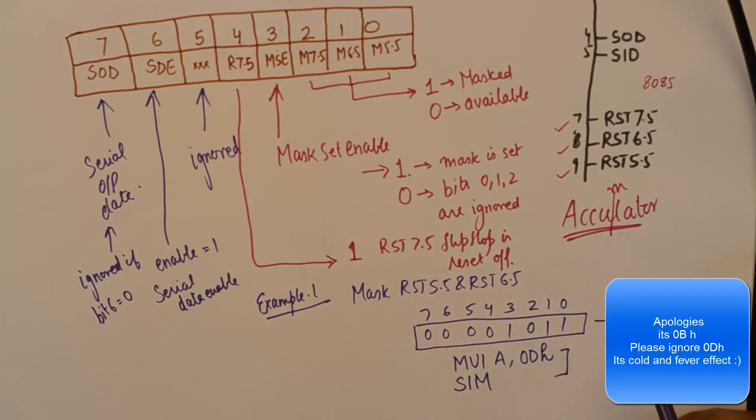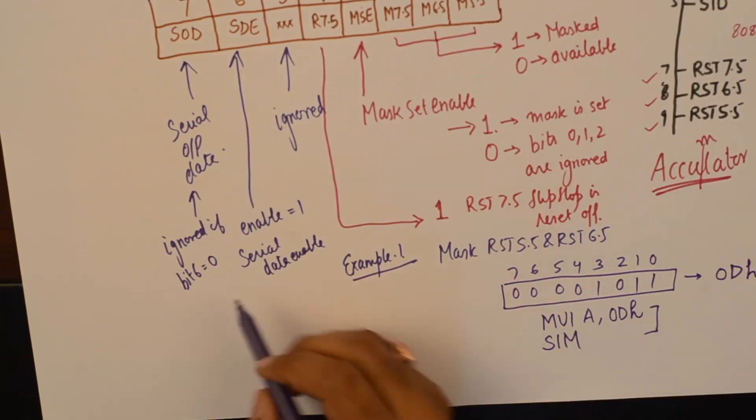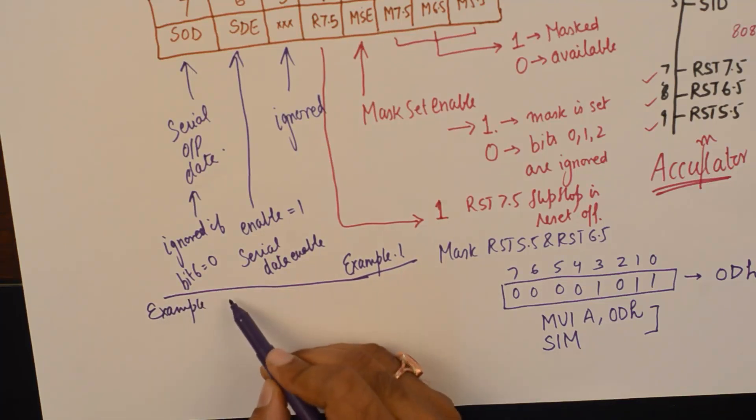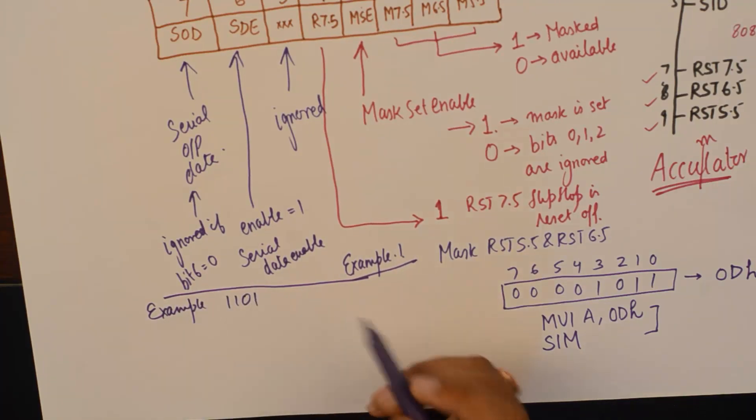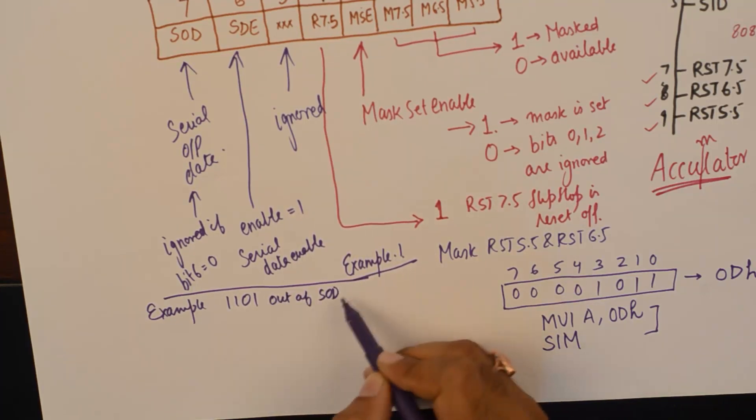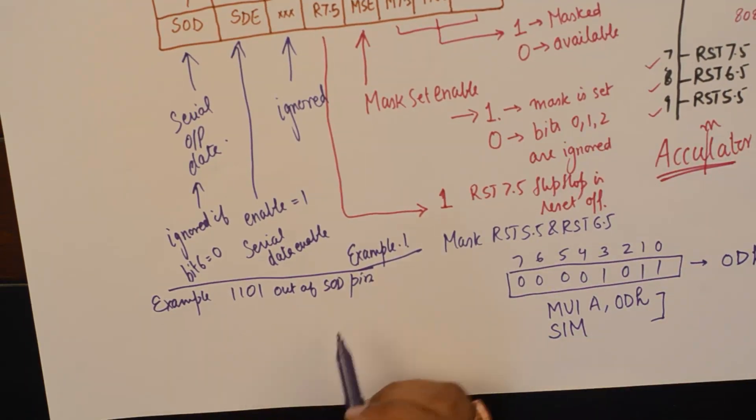Another example is sending a serial data. For example, I want to send 1 1 0 1 out of serial output data pin. So what I will do is, I will first find out the code for this.